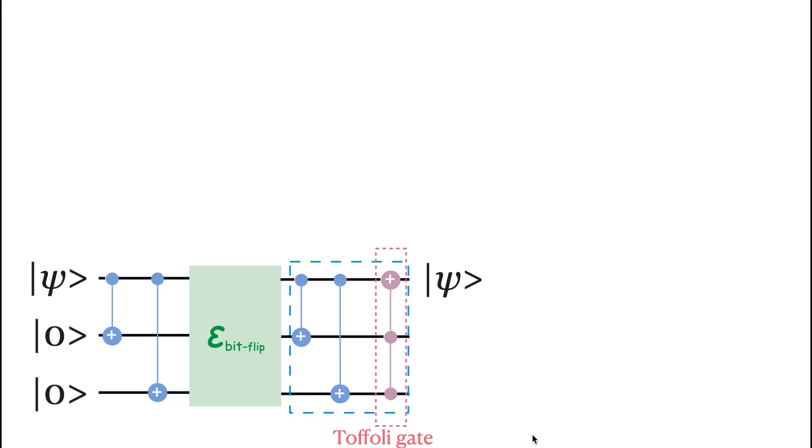After passing through the bitflip simulation at the decoder, in order to correct the bitflip, the CNOT gates are applied to the ancillary qubits.